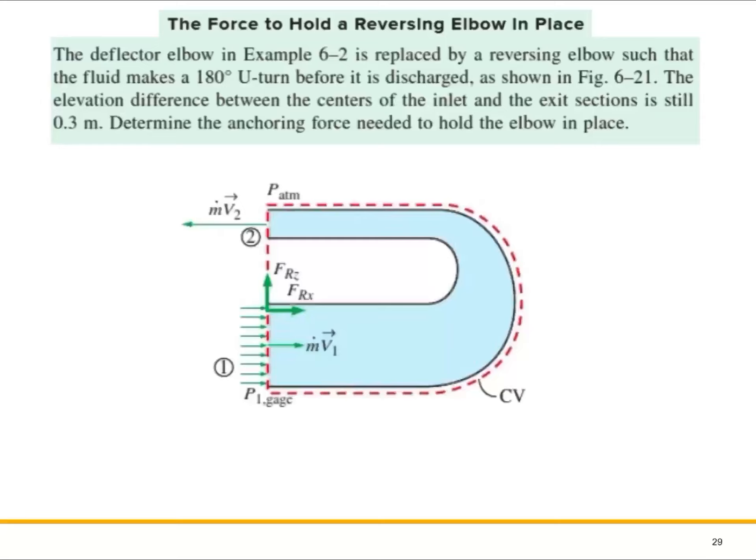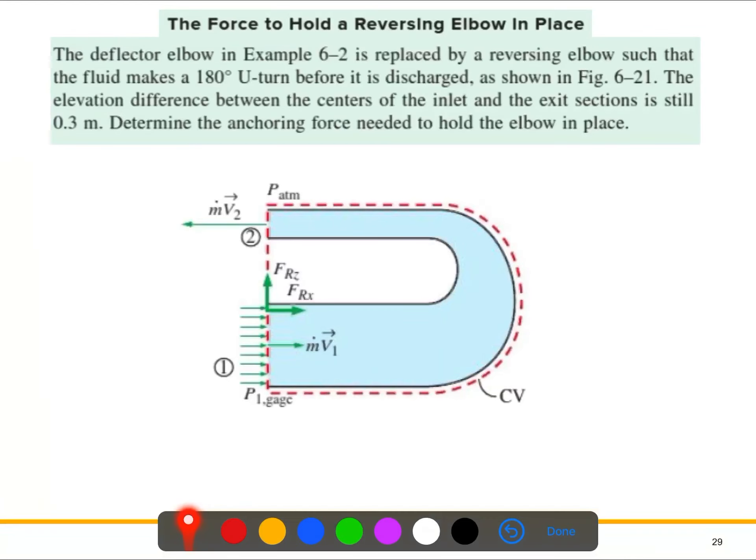Okay, so this is the problem. We will work with a reversing elbow. Previously we solved the problem where we had the elbow with 30 degree angles. Now this is a deflector elbow that is replaced with a reversing elbow, and it makes a 180 degree angle, kind of a U-turn here. This is the inlet, this is the outlet.